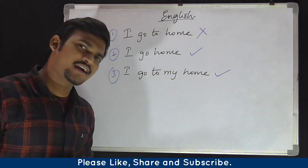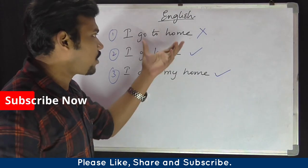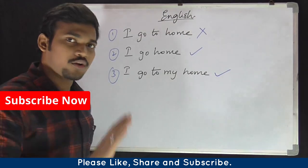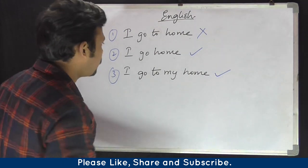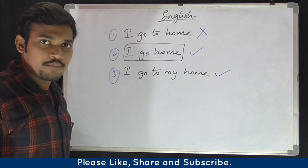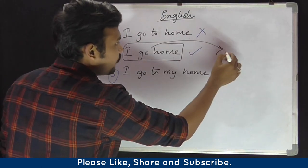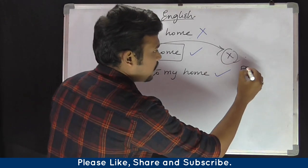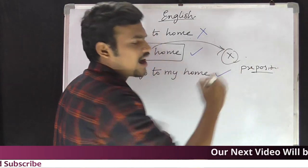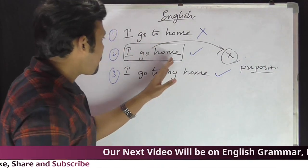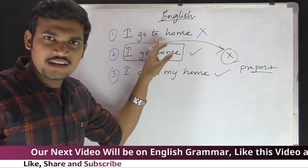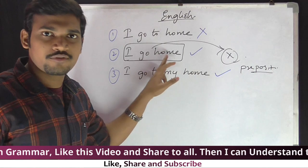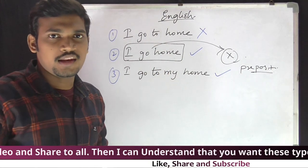Now let's look at another mistake. Consider the sentence: 'I go to home.' What is correct or wrong here? The correct form is 'I go home' — not 'I go to home.' That means we do not need to use any preposition before 'home.' Home is not a noun in this context, so a preposition is not needed before it.